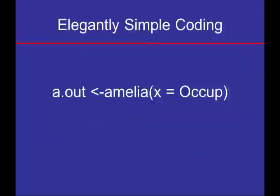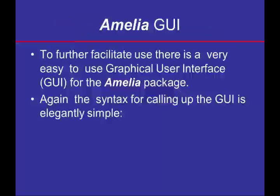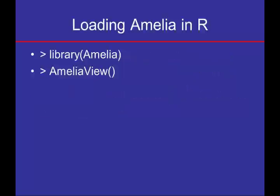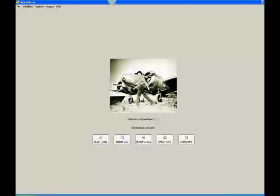Notice that the coding, even without the GUI, is elegantly simple. If you're going to use the defaults, the syntax is minimal. Because we want to make multiple adjustments, the graphical user interface is indicated. The syntax for calling up the GUI is elegantly simple — we call up the library and then the term AmeliaView in brackets. Within R, this gives you a graphical user interface from which you can import data from SPSS, STATA, or more commonly a comma-separated file created in Excel, as well as data in R format.